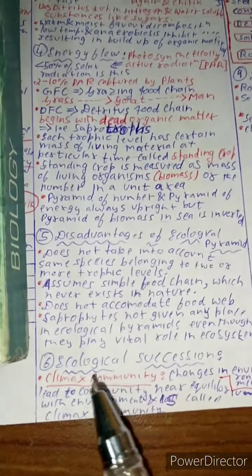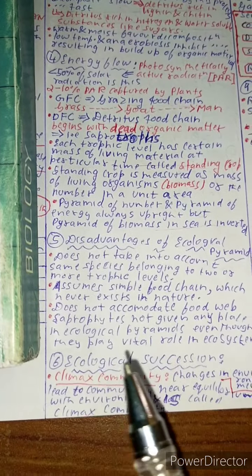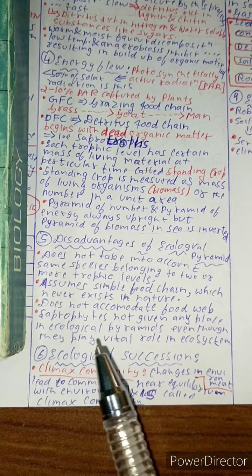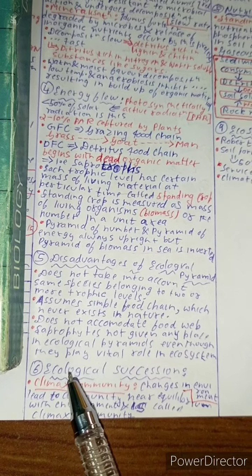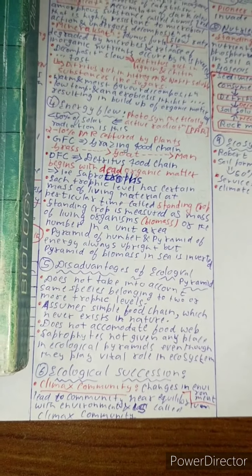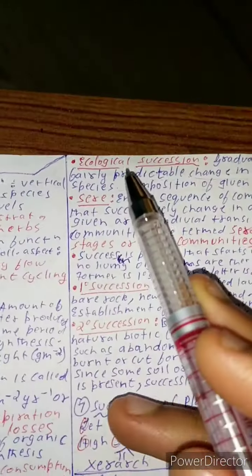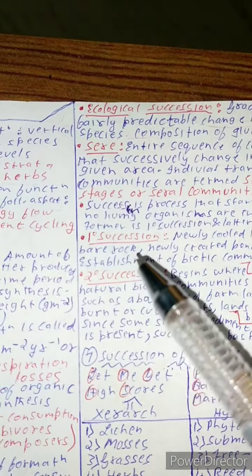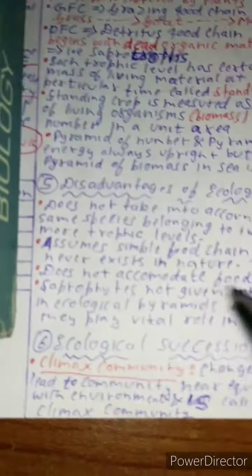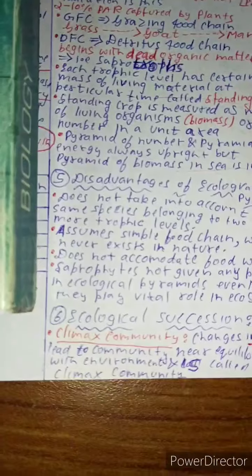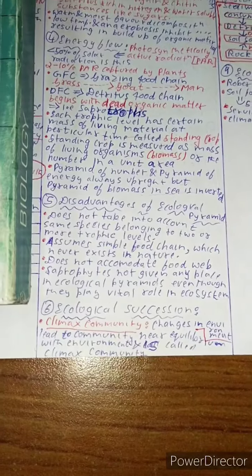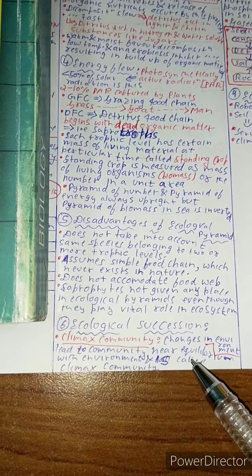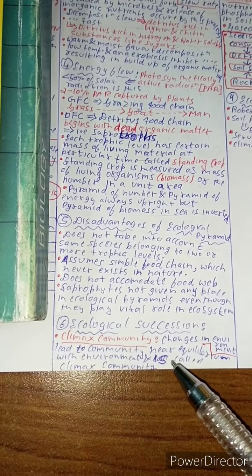The next topic is ecological succession. What is ecological succession? First of all, before going to know about ecological succession, you need to know about some terms like climax community. What is climax community? Climax community is the changes in the environment which lead to community near equilibrium with the environment and is called climax community.